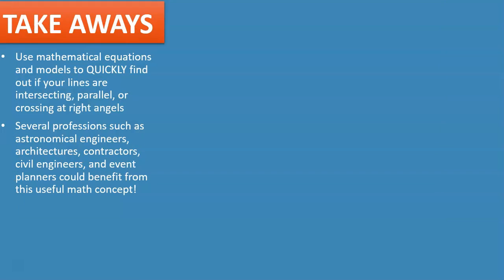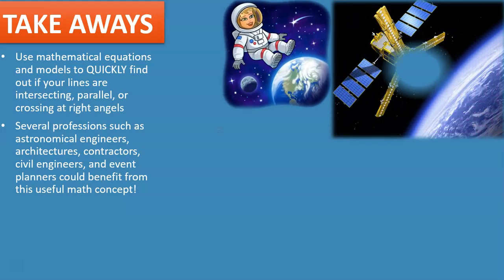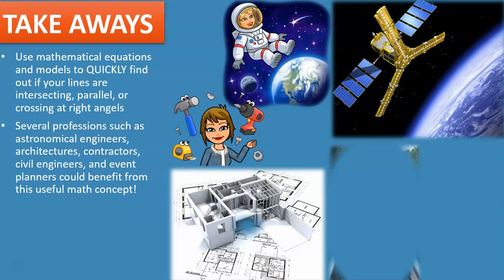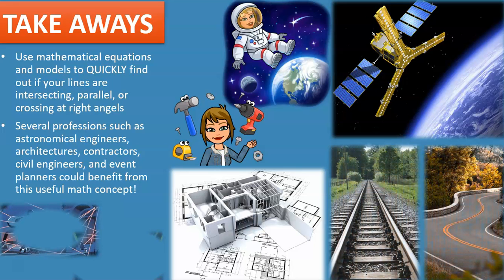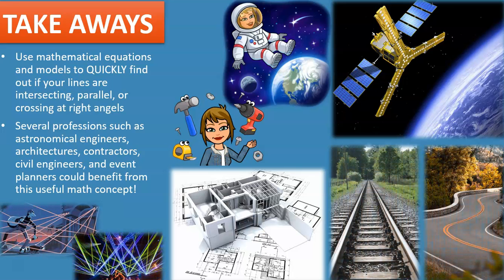So our takeaways: We use mathematical equations and models to quickly find out if the lines are intersecting, parallel, or crossing at right angles. There are several professions such as astronomical engineers, architectures, contractors, civil engineers, and event planners that could definitely benefit from this math concept, and they probably use it.